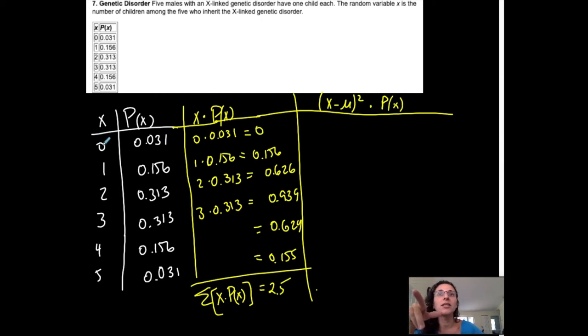So the first one, X. 0 minus the mean we just determined was 2.5, then square it, then multiply by the probability, which is 0.031, whatever that number is. Next, X. My next X is 1. 1 minus the mean, 2.5, square it, times the probability value that corresponds to that, 0.156.